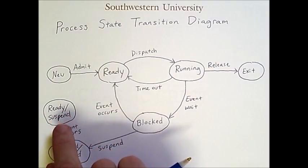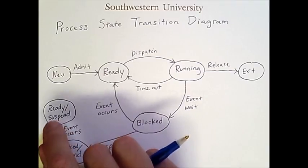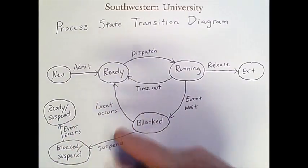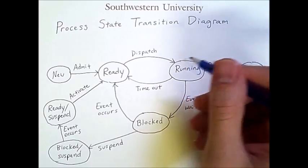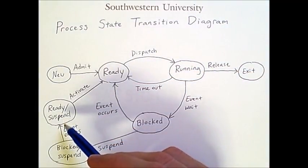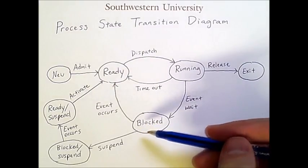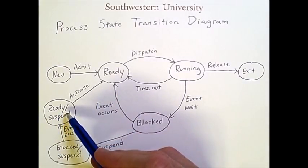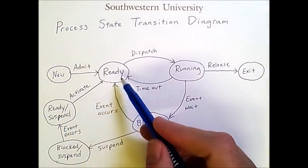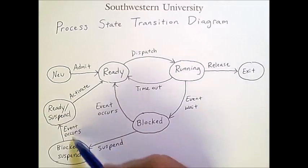To be able to run, a process must be in main memory, so it needs to transition from the ready-suspend state into the ready state. This is done with the activate transition. If a process has been on disk waiting for its turn to run, or if all processes in main memory are blocked, the OS will transition some ready-but-suspended processes from secondary memory back into main memory. From there, they can be dispatched as usual and run on the processor.